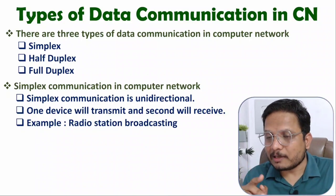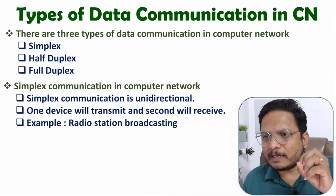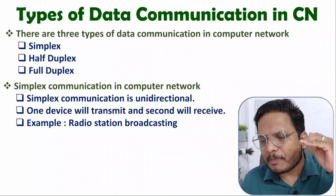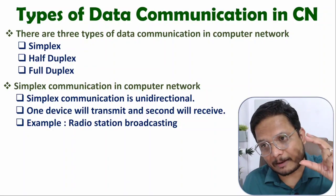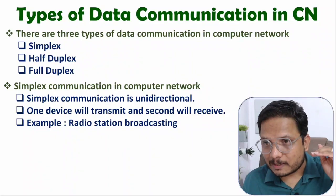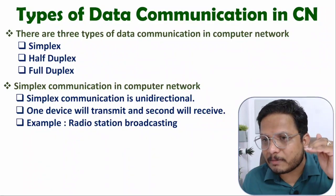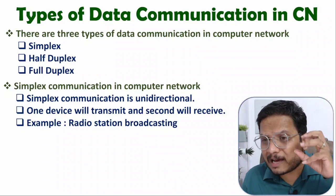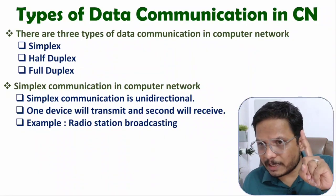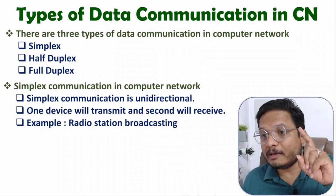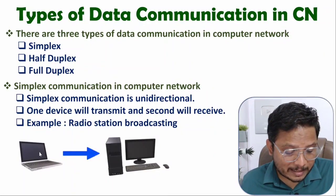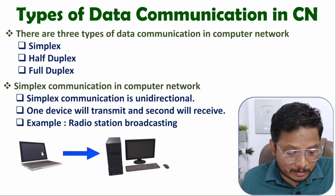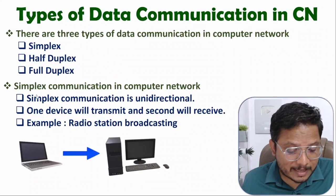In simplex communication, there can be infinite receivers. The reason is receivers are just receiving data — there can be only one transmitter but receivers can be infinite. Here I have shown one example where this computer is sending data to another computer, and transmission is happening in one direction only. That is simplex communication.